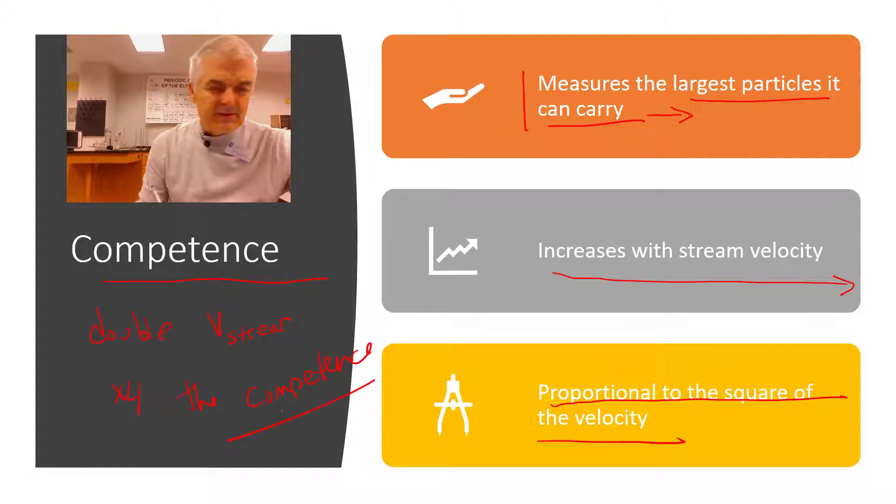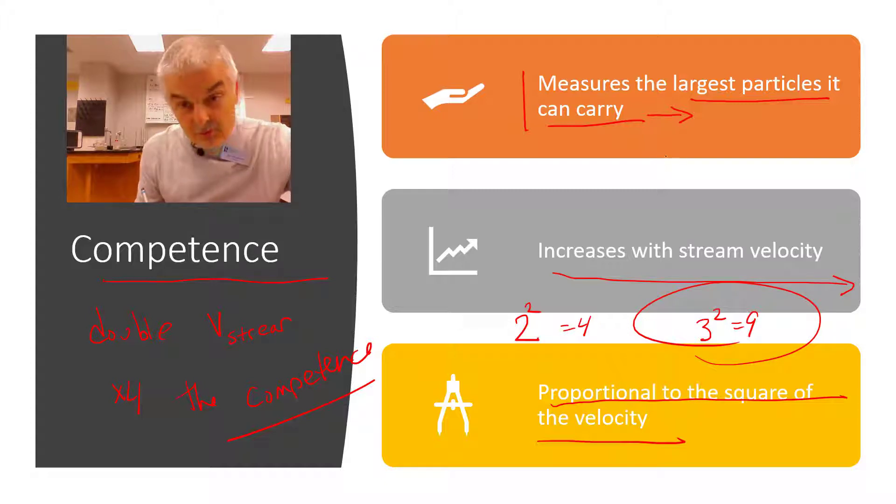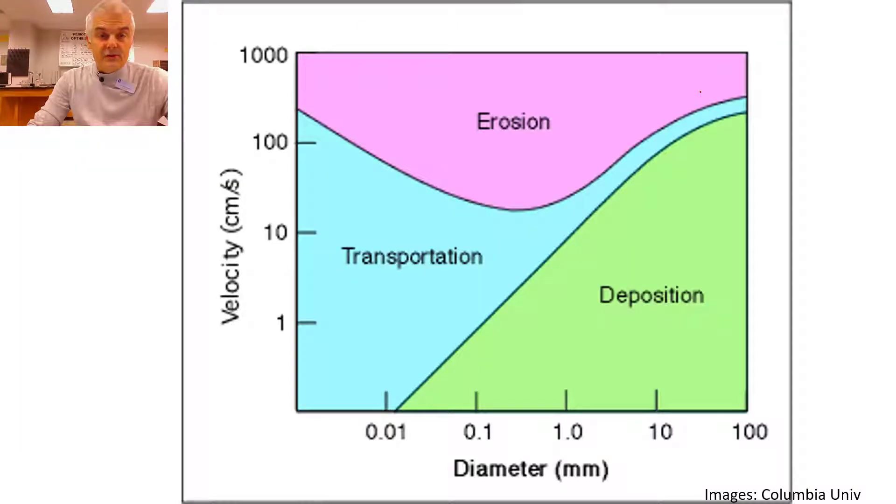What do I mean by that? Well, it's easy, right? If you double something, times two, but it's squared, two squared is four. If I were to triple it, three squared is nine. And so it could carry much, much larger particles. And the point of this is when you have a big event, like a flood event, where the stream velocity increases significantly, then the competence increases with the square of the velocity. And now the size of the particle that can be carried down the stream gets much quicker, much, much faster. That's what competence is.